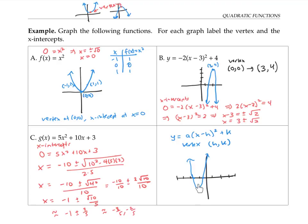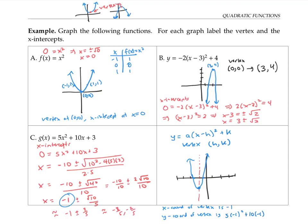Notice that the x-coordinate of the vertex is going to be exactly halfway between the two x-intercepts by the symmetry of the graph. The number halfway between −1 + √10/5 and −1 − √10/5 is exactly −1. So the x-coordinate of the vertex is −1, and I can find the y-coordinate by plugging x = −1 into the original function: 5(−1)² + 10(−1) + 3, which simplifies to negative two.